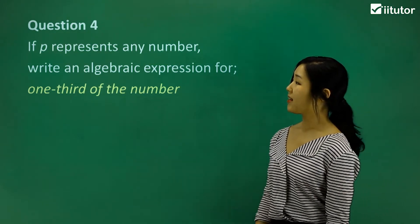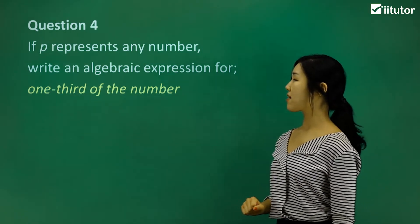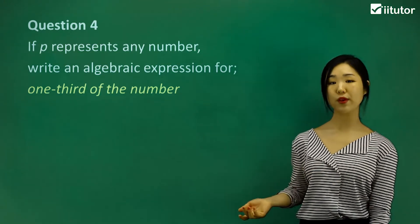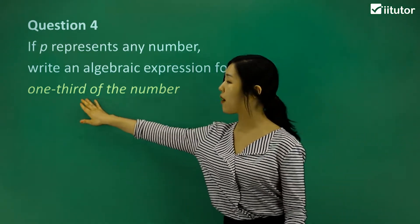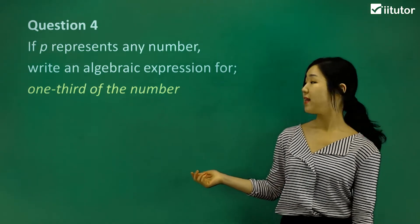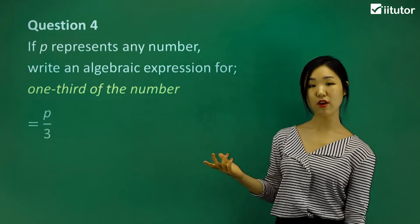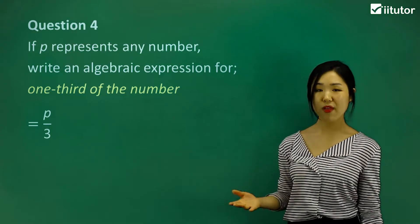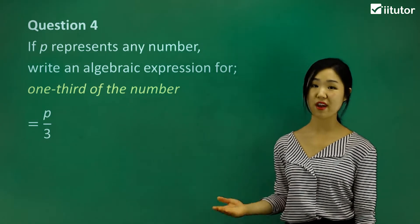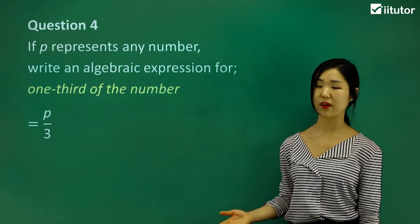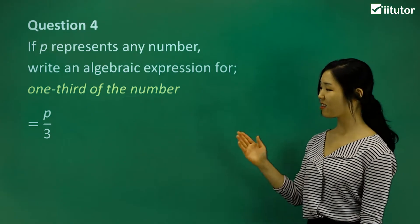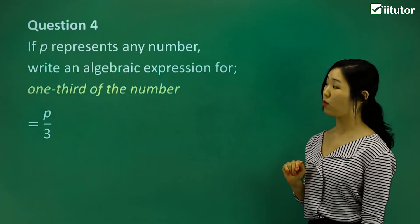Question four: if p represents any number, write an algebraic expression for one-third of the number. We're using p, and we want to write one-third of p in algebraic form. It would simply be p over three, or one-third of p, which is p over three. One-third means we're dividing by three, so you're basically dividing p by three. Use fraction notation when you're doing divisions.